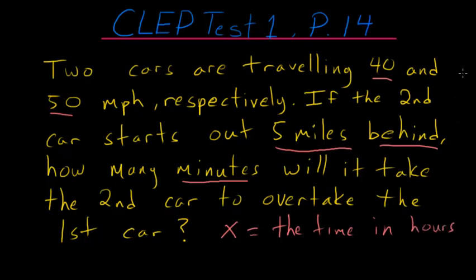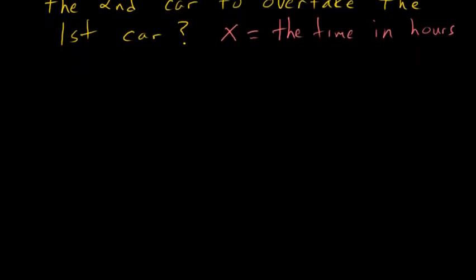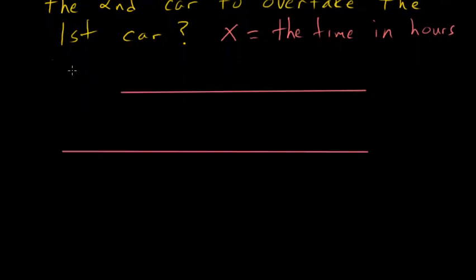One of the easiest ways to look at this problem is to draw a diagram. So we have two situations. We have two cars. Let's say the top one is for the first car and the bottom is for the second. And notice that in the second case there's a five mile gap. And we know that they're eventually gonna meet at this point but we don't know how long it's gonna take.